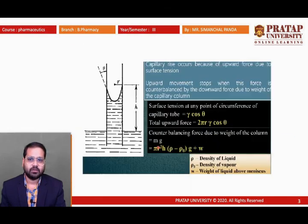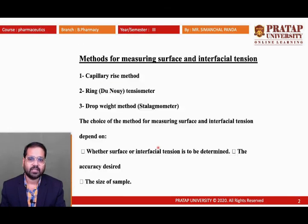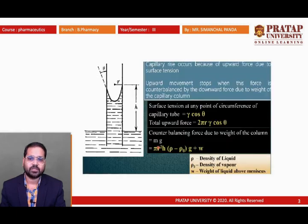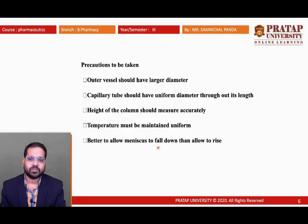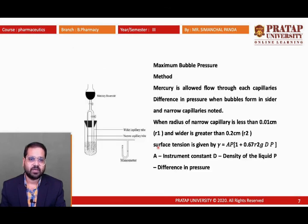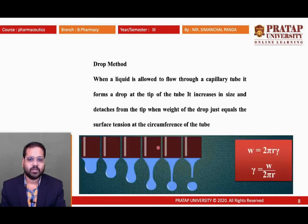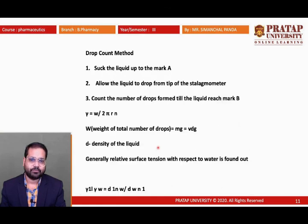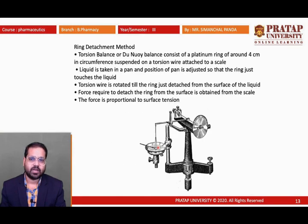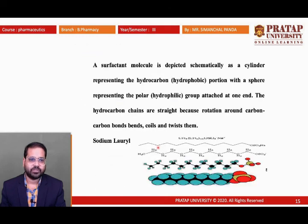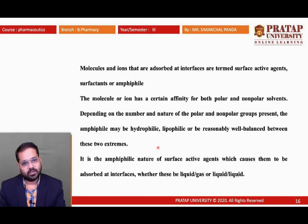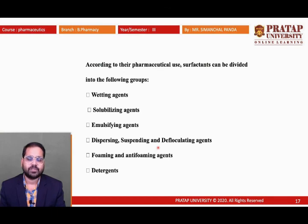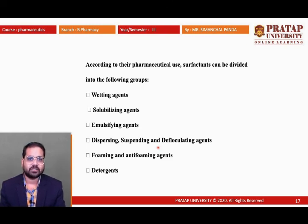Today we studied the capillary rise method including its derivation, the du Noüy tensiometer, the maximum bubble pressure method, the drop method using the stalagmometer, the ring detachment method, and the different categories of surface active agents. The surface tension chapter is now complete. In the next class we will study a new chapter. Thank you.